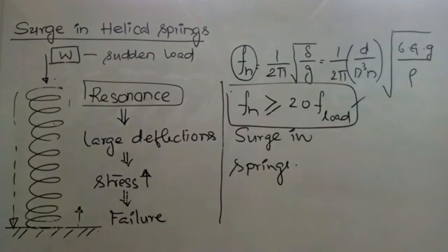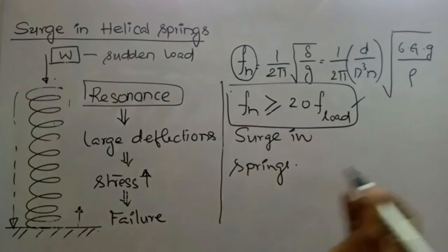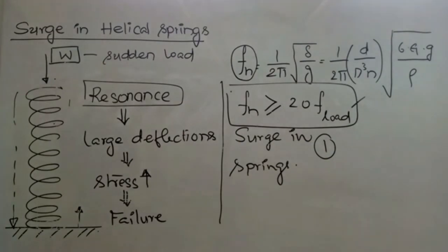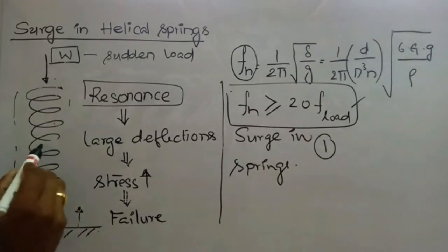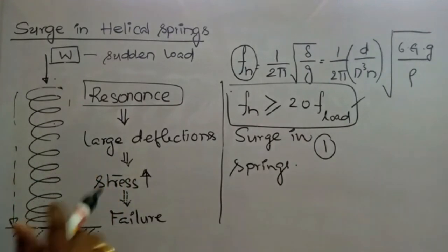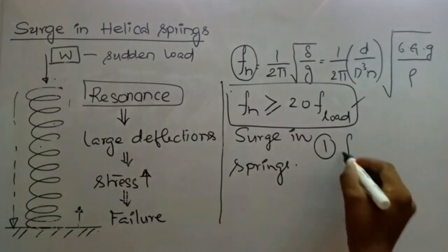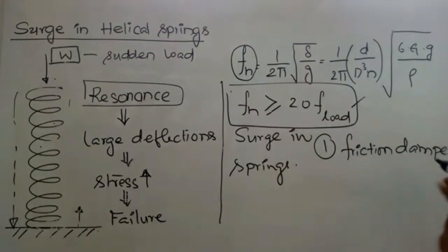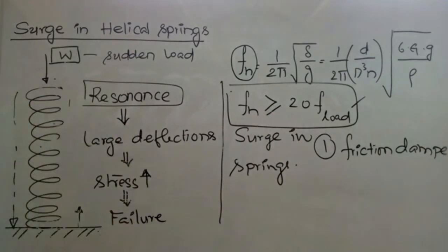This is one of the precautionary measures to avoid surging in springs. There are other methods as well. Surging can be eliminated by: first, placing vibration dampers or friction dampers in between the coils — particularly at the center coil — so that the deflection wave is damped out easily, avoiding propagation of the deflection wave.